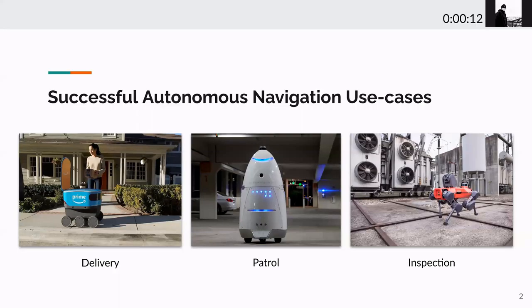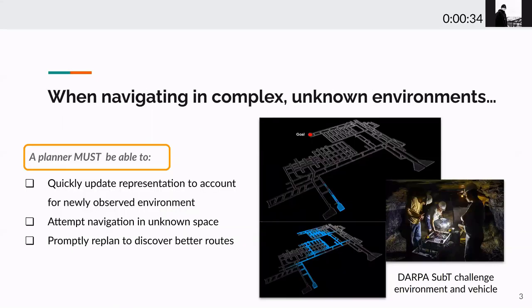Today, we see robots being deployed all around the world to provide services in our daily lives. Here are a few successful examples from delivering robots to patrol robots and inspection robots navigating on industrial sites. However, when it comes to navigation in complex and unknown environment, the problem is still challenging.